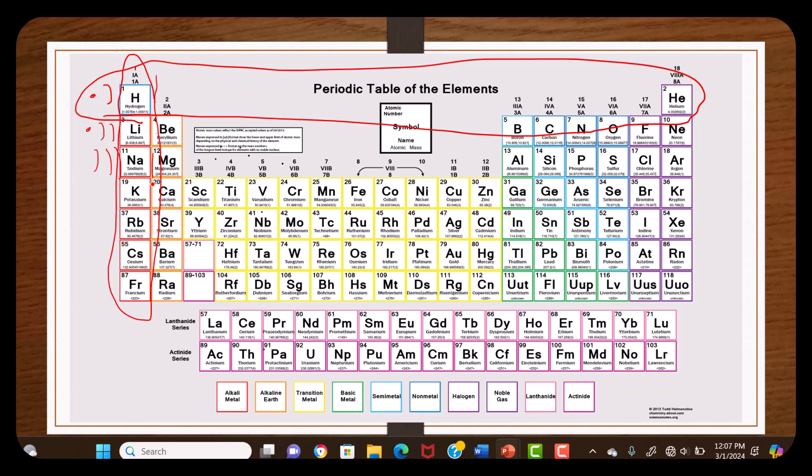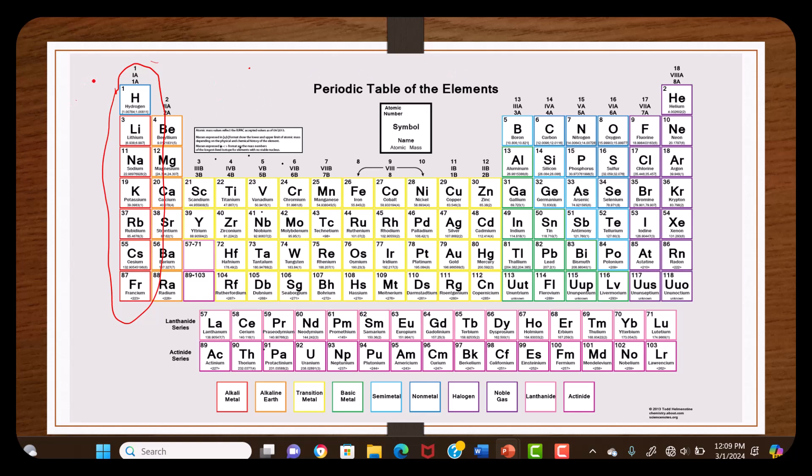We know that the groups, or vertical columns, describe how many valence electrons are in the outermost shell. Looking at group one, as we go down the periods—period one, period two, period three—there's one valence electron on the outermost shell. For column two, period two has two shells and period three has three shells, so there are two valence electrons in the outer shell.